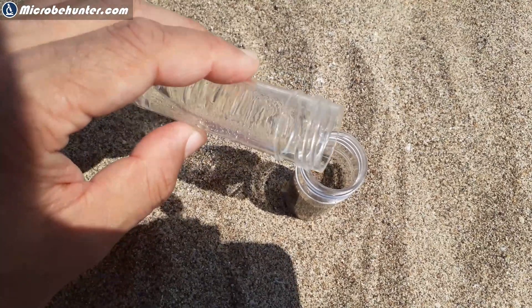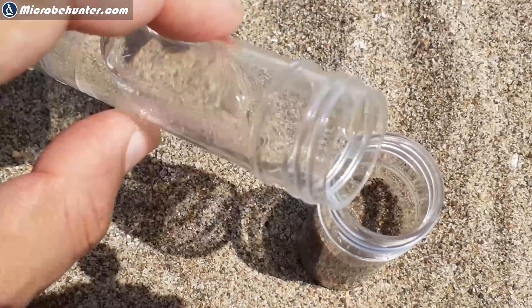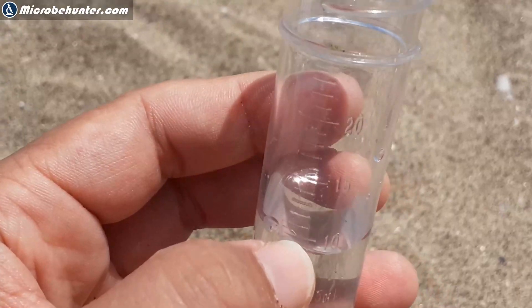I've taken along a few of those plastic centrifuge tubes here. They're graduated. This means that it goes all the way up to 25 milliliters and I'm going to now use those containers to determine the amount of air, the volume of air inside the sand. I'll fill up the container with sand and then I'll add some water to see how much water is needed to displace the air.